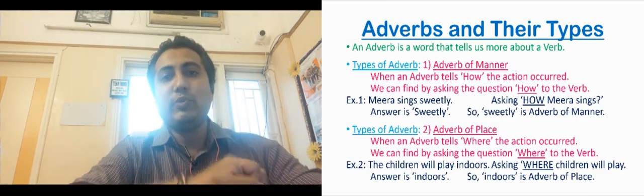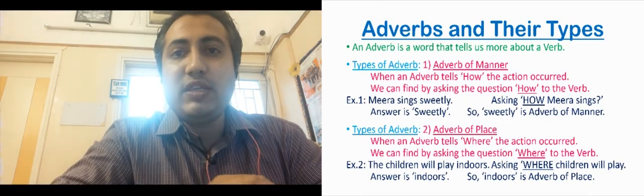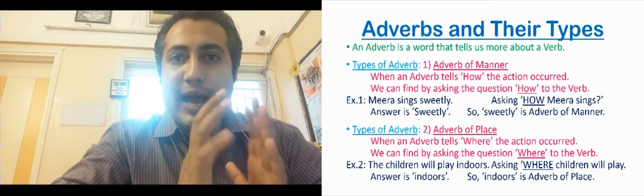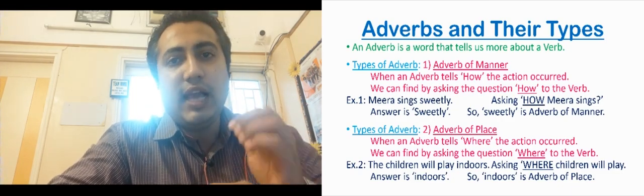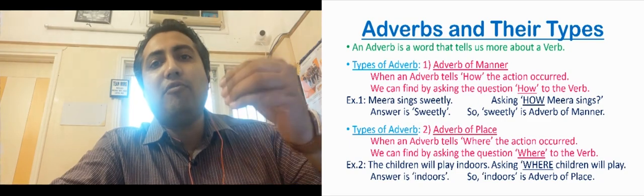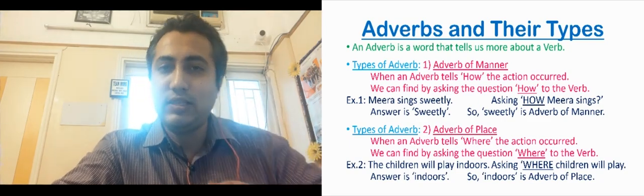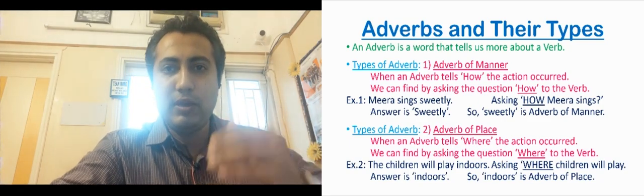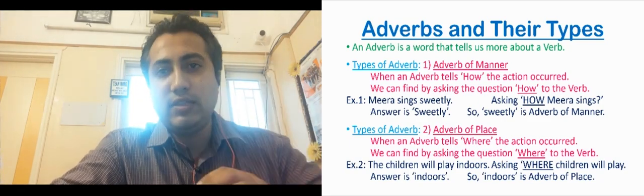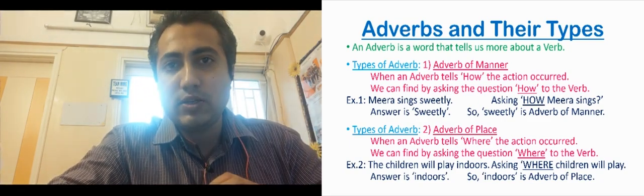Let me try to explain what is an adverb first. An adverb is a word that tells something about the verb in the sentence, or basically something about the action that is done in the sentence.